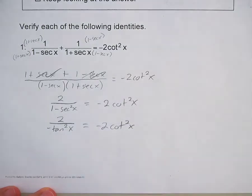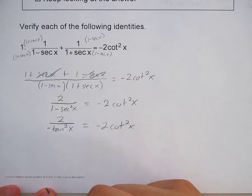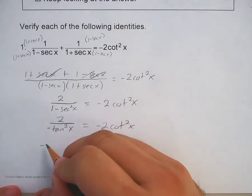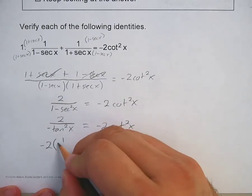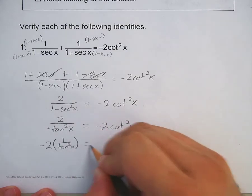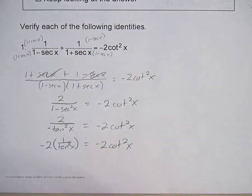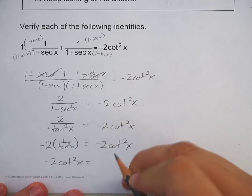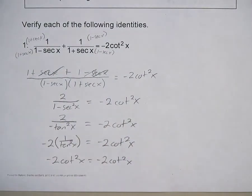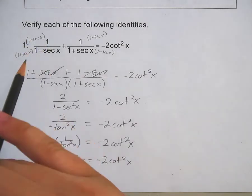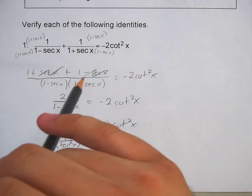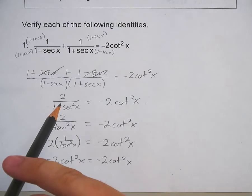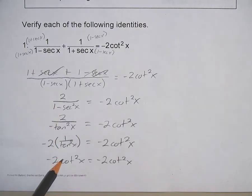So I've got 2 over negative tangent squared x, equals negative 2 cotangent squared x. The only thing left: take the negative and the 2 out, and rewrite 1 over tangent squared x — well, that's cotangent squared x. So negative 2 cotangent squared x equals negative 2 cotangent squared x. Not too shabby. I got common denominators, combined the top to get 2, simplified the bottom, and flipped 1 over tangent squared to get cotangent squared.